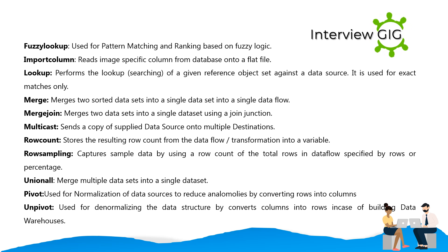Additional SSIS transformations: Lookup — performs searching of a given reference object set against a data source for exact matches only; Merge — merges two sorted data sets into a single data flow; Merge Join — merges two data sets using a join; Multicast — sends a copy of a data source to multiple destinations; Row Count — stores the resulting row count into a variable; Row Sampling — captures sample data by row count or percentage; Union All — merges multiple data sets into a single data set; Pivot — used for normalization by converting rows into columns; Unpivot — used for denormalizing data by converting columns into rows, useful for building data warehouses.